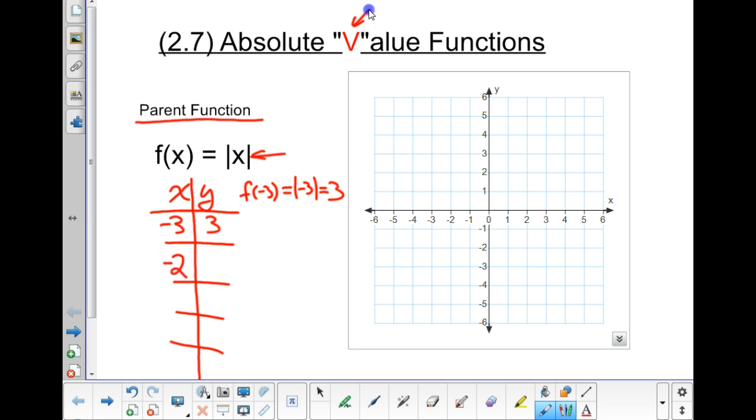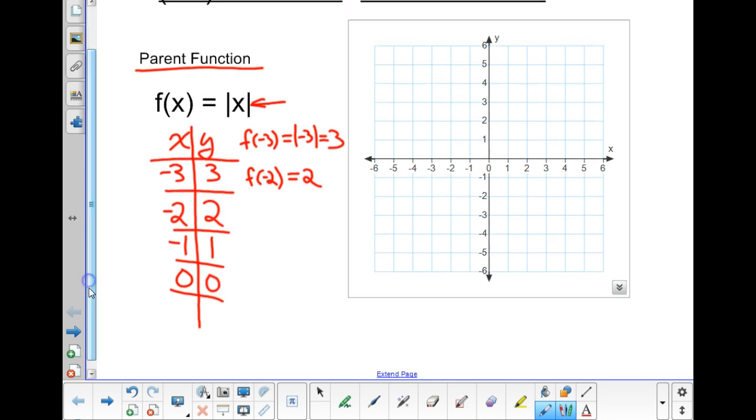If I plug a negative 2 in for x, again, I get f at negative 2 equals absolute value of negative 2 is 2. So when x is negative 2, y is 2. If I plug a negative 1 in for x, as you can see, I'm going to get a 1 for y. If I plug a 0 in for x, I get an absolute value of 0 is 0. And if I plug a 1 in for x, I still get 1. And let's do one more point, or actually two more points. A 2 in for x, the absolute value of 2 is 2. And a 3 for x, the absolute value of 3 is 3.